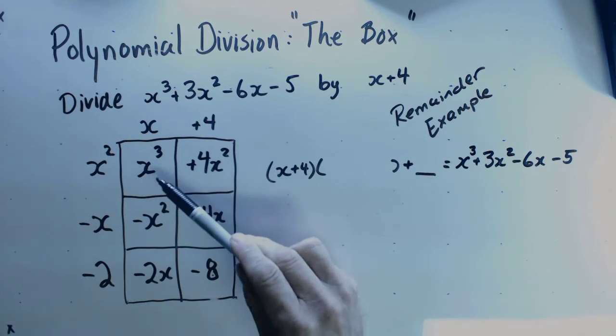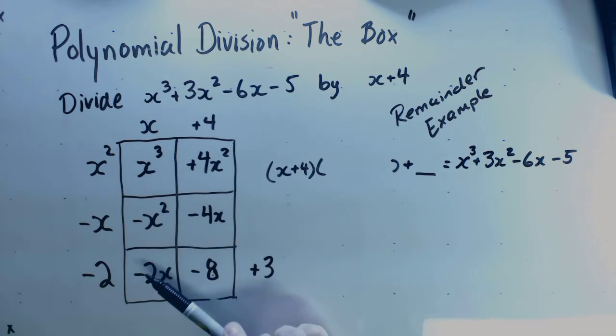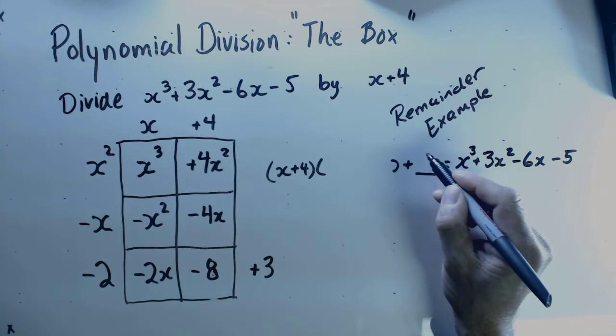And so this is my resulting polynomial, x³ + 3x² - 6x - 8, and there's a remainder of 3 here.